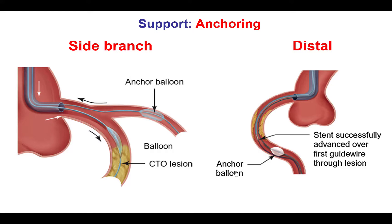We then thought that if we delivered an angiosculpt balloon, we could possibly dilate that lesion, and we attempted what's called the distal anchoring technique. Distal anchoring is extremely useful in these complex cases of delivery through calcium and tortuosity, and can be done by advancing two wires through the coronary artery. One balloon is advanced over one of the wires, the balloon is inflated distally, pinning the other wire against the wall of the vessel, providing good support for advancing balloons and stents over the second trapped or anchored guide wire.